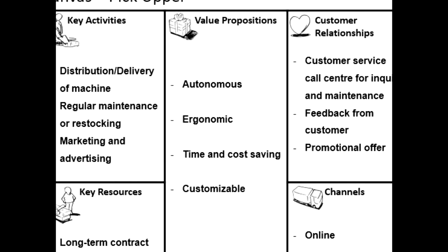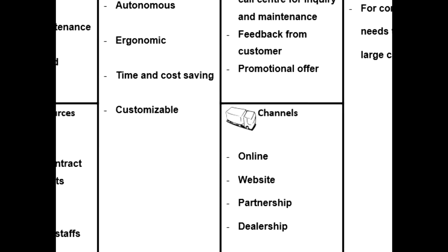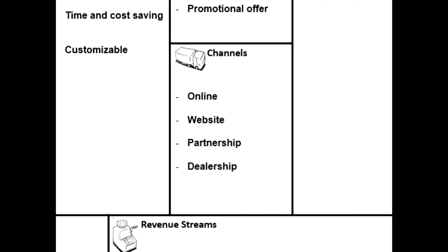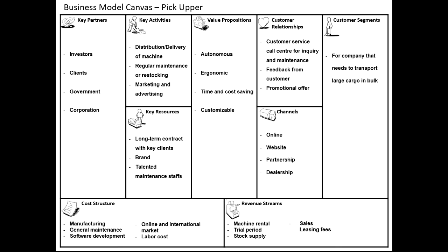The values that we deliver to the customer are: autonomous, ergonomic, time and cost saving, and last but not least, customizable. Lastly, for the channel, we have four channels. First is online, like WhatsApp or email. Second is website — customers can also explore our website. Third is partnership, and lastly is dealership.